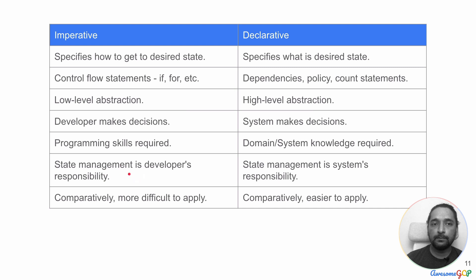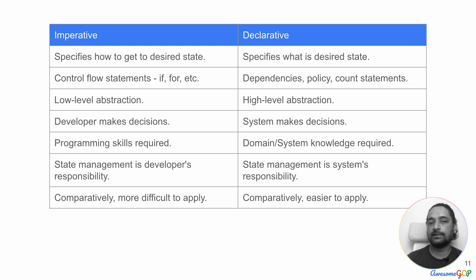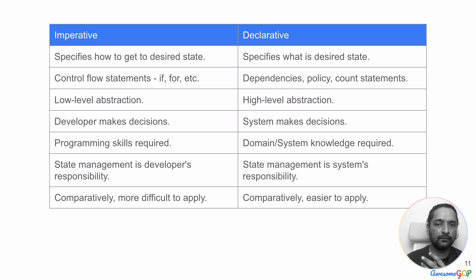State management is a developer's responsibility in imperative code, while in declarative code it's the system's responsibility. State management is quite difficult, so it becomes easier in certain use cases to just have a system handling it for you. Comparatively, imperative code is more difficult to apply in terms of the skill sets needed and the amount of code written, whereas declarative code is comparatively easier to apply.